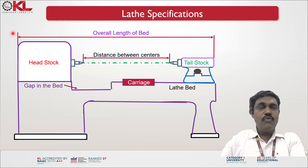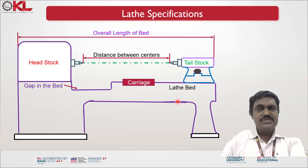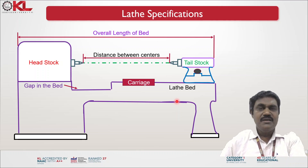The next specification is the overall length of the bed — from the headstock to the tailstock. This tells us the overall space required to accommodate your lathe machine.